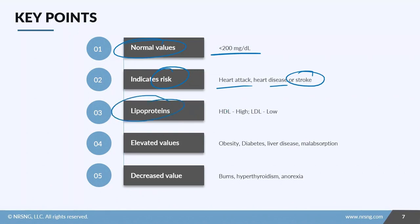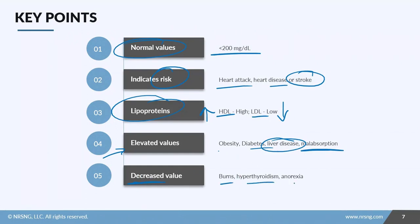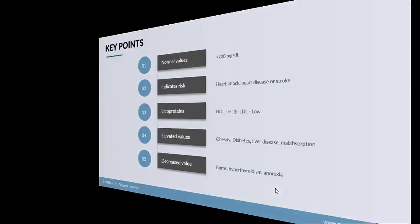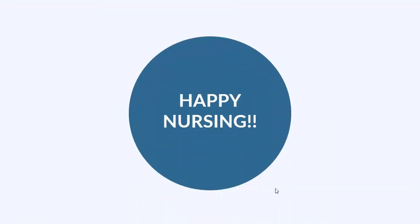Cholesterol is made up of lipoprotein subunits: HDL, high density lipoprotein — keep that elevated; and LDL, low density lipoprotein — keep that decreased. Elevated values are seen in patients who are obese, have diabetes, liver disease, or malabsorption problems. Decreased values are seen in patients with burns, hyperthyroidism, and conditions like anorexia. Make sure you check out all the resources attached to this lesson — now go out and be your best selves today, and as always, happy nursing.